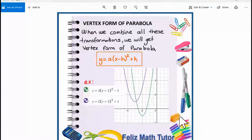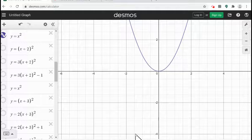For example, in my examples here is y equals 3 times x plus 2 to the second power minus 1. So let me show how many steps I'm using to transform it in Desmos.